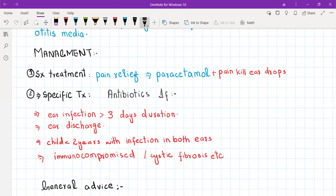Regarding treatment, symptomatic treatment is pain relief, so you will give paracetamol and also painkiller ear drops containing local anesthetics. Specific treatment is antibiotics, but you should not offer antibiotics to everyone with otitis media because in most cases otitis media is viral.